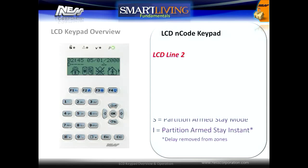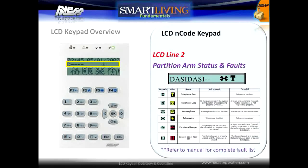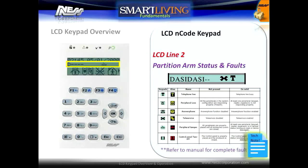Line 2 displays area partition status on the left and system faults on the right. Multi-area arm status is indicated by the letters. A dash means that a partition is not enabled. System faults are displayed via an icon, and the description for these icons can be found in the installer manual and user manual.